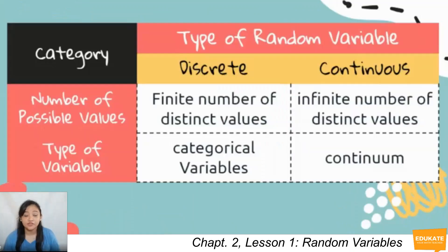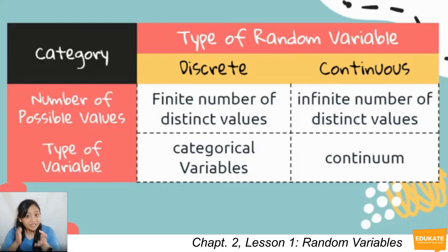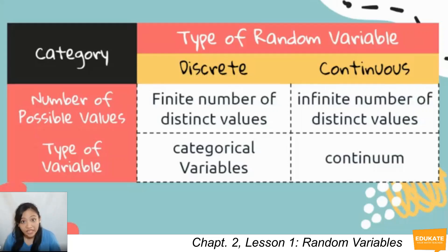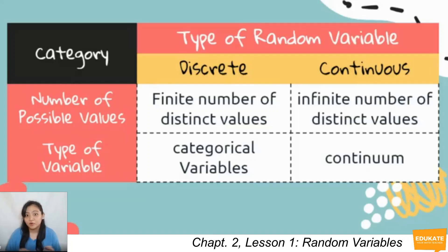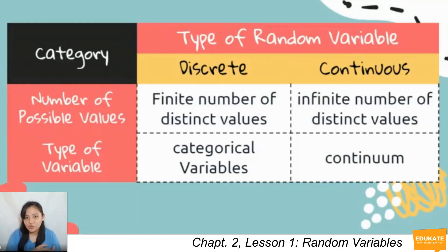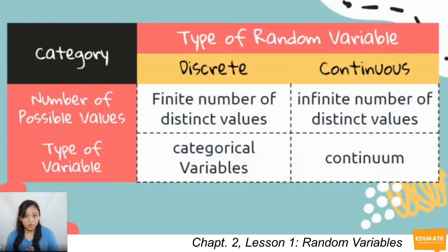There are two types of random variables: discrete and continuous. A discrete random variable has a finite number of distinct possible values, and the type of variable is categorical or finite. Examples include: the number of heads obtained when tossing a coin thrice, the number of siblings a person has, the number of students present in a classroom, and the number of crushes a person has. For categorical variables, we can assign 1 for normal BMI and 0 for not normal BMI.